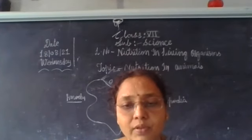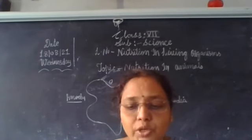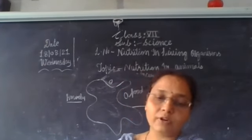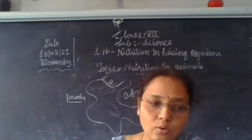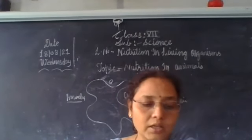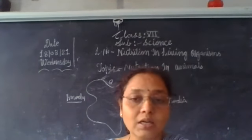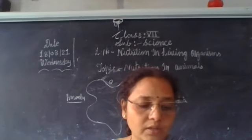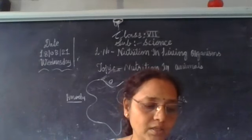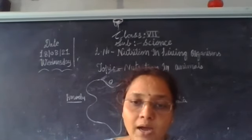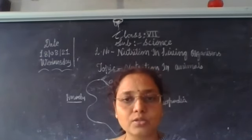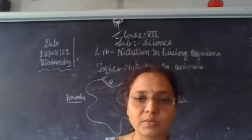In our next period we will learn another two types of nutrition: saprozoic nutrition and parasitic nutrition. First we learned holozoic nutrition — holozoic nutrition means food enters directly into the body; organisms ingest complex organic food substances, digest them by the action of enzymes produced within their body, and expel the digestive waste outside. Amoeba and human beings are examples of holozoic type of nutrition. Next period we will continue.